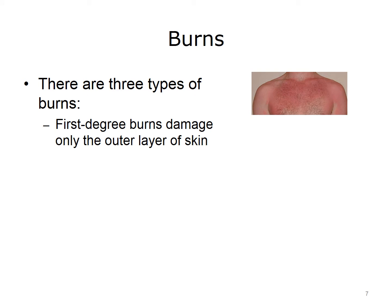Burns are a common injury to the integumentary system. Burns can be caused by scalding hot water, fires, and flammable liquids and gases. There are three types of burns, depending on how severe the damage is to the skin and its underlying tissues. The three classifications of burns are first degree, second degree, and third degree.